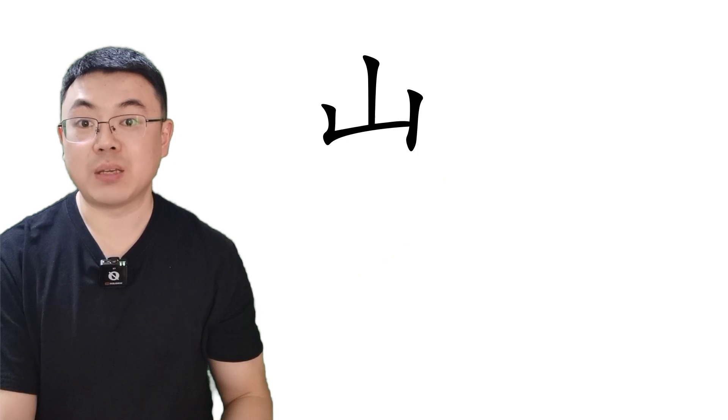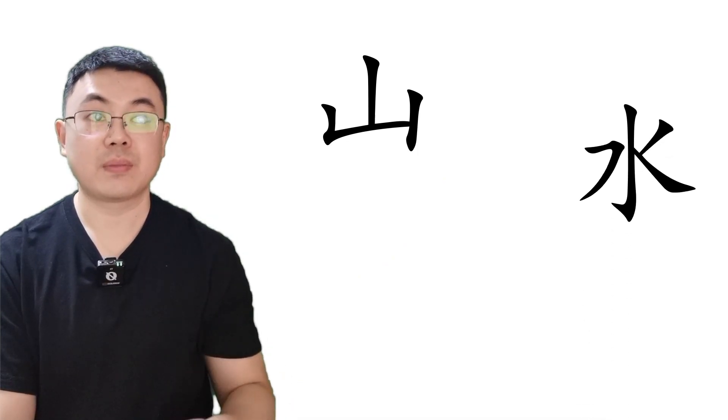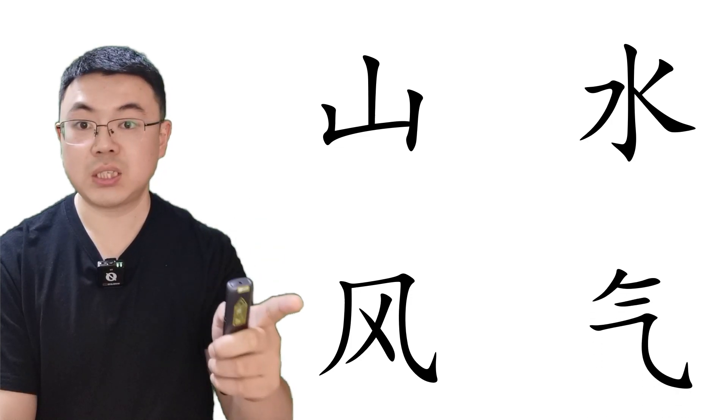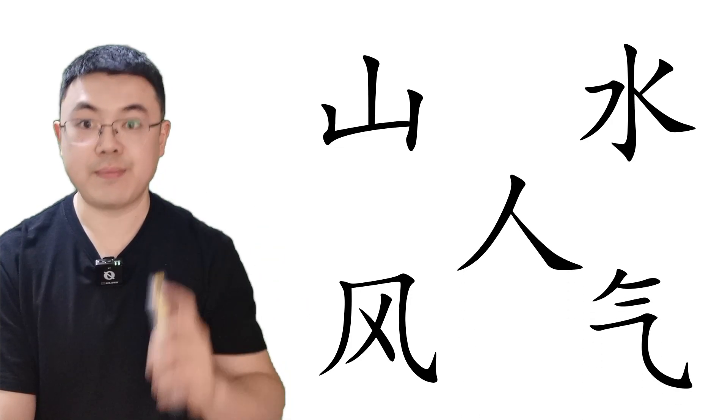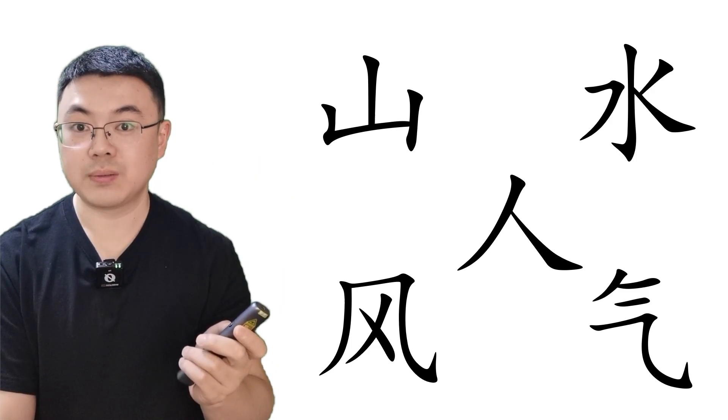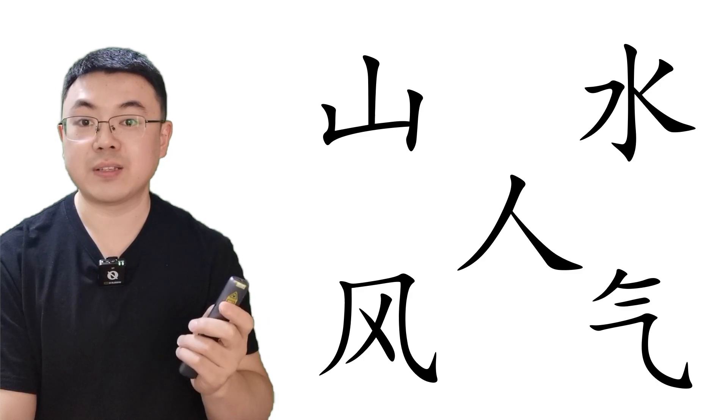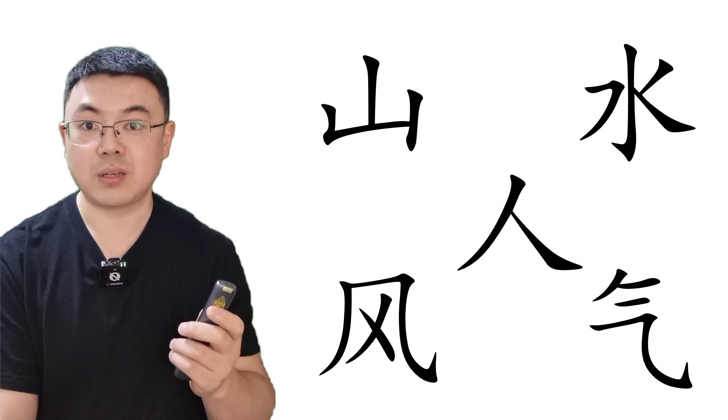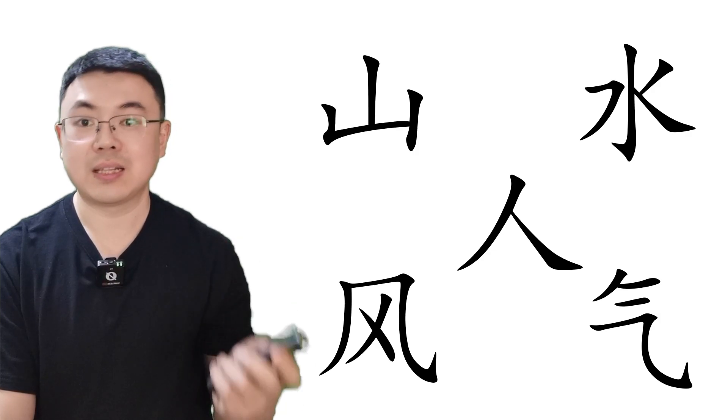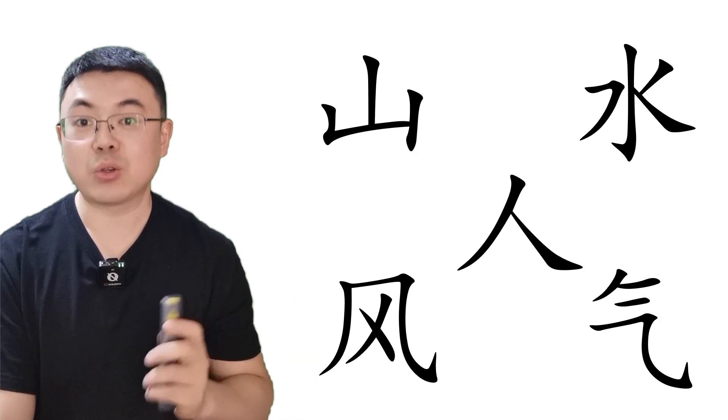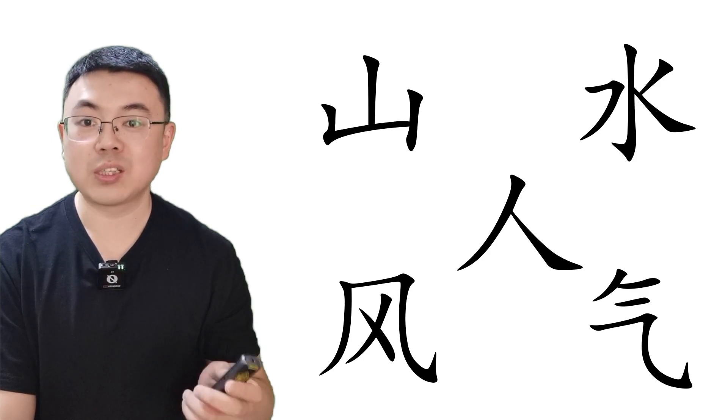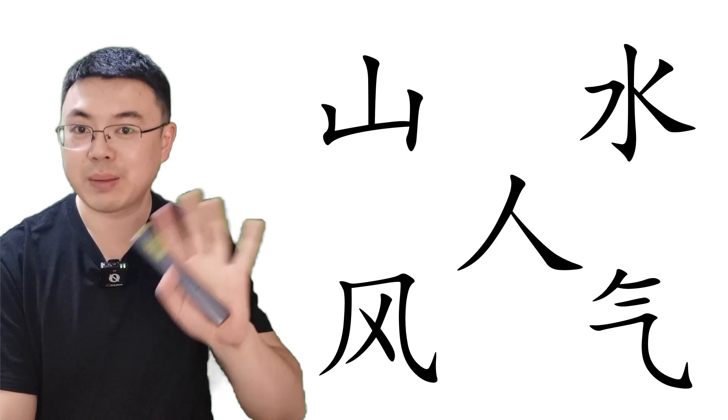Now let's make a conclusion of all these five characters. Please read after me. Shan, shui, feng, qi, ren. They are all about nature, the natural world. I want all my friends and followers and fans to have a relaxing and harmonious and natural life. That's all for today. Thank you for watching. I will provide you more learning materials in future lessons. Bye-bye.